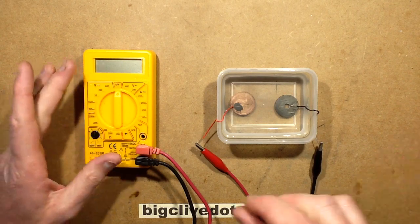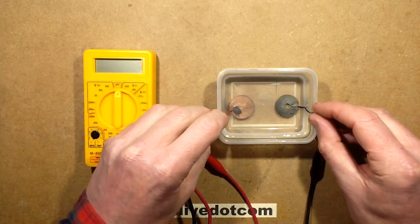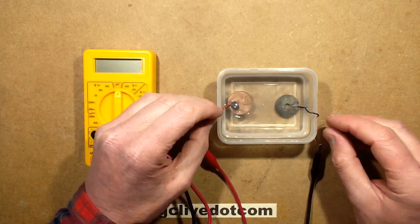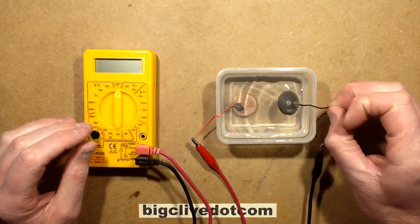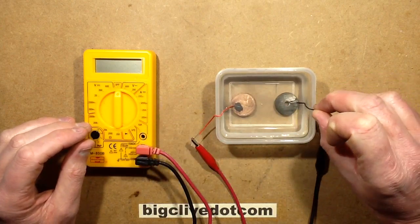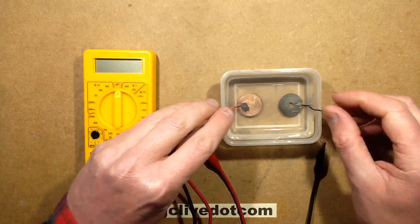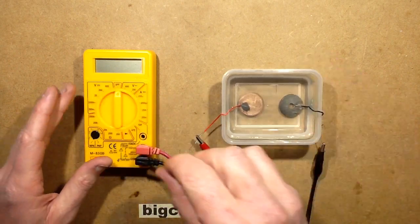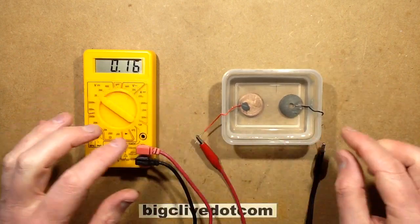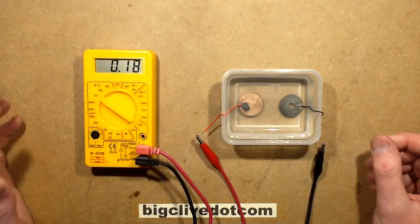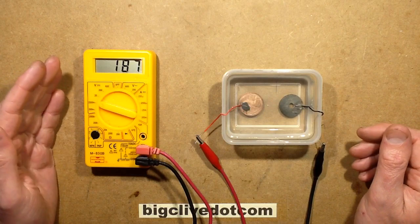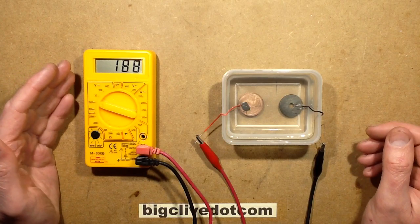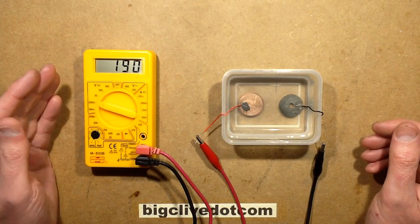So this is a copper coin with a lead soldered onto it, lead-based solder which is also taking part in the reaction, and a steel washer which originally had zinc on it but I think most of the zinc has been eaten off by now through the other experiments. So this is sitting in salty water. If I turn the meter around to volts, it's not really that dramatic. It's about 188 millivolts. It's nothing really major, not even half a volt.